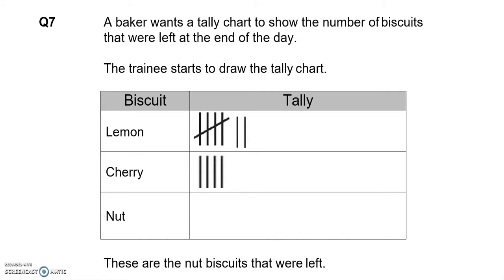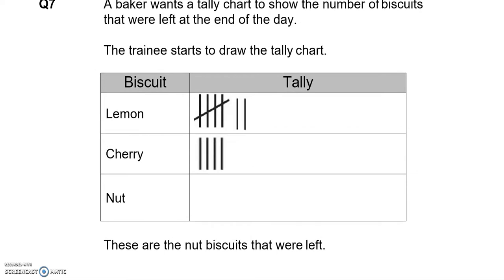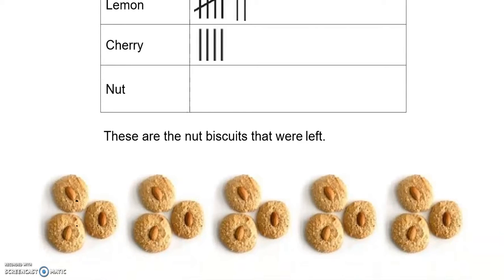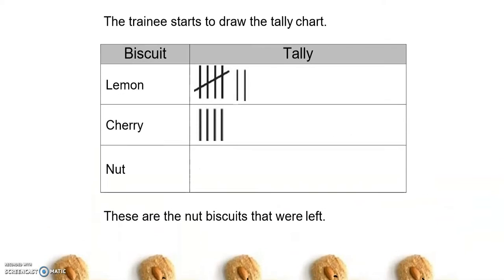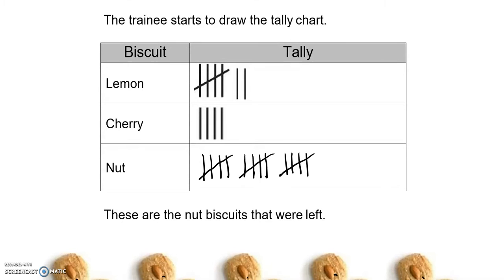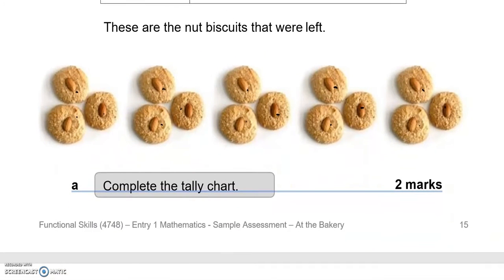A baker wants the tally chart to show the number of biscuits that were left at the end of the day. The trainees start to draw the tally chart. These are the nut biscuits that were left: 1, 2, 3, 4, 5, 6, 7, 8, 9, 10, 11, 12, 13, 14, 15 of them. We have completed the tally chart.